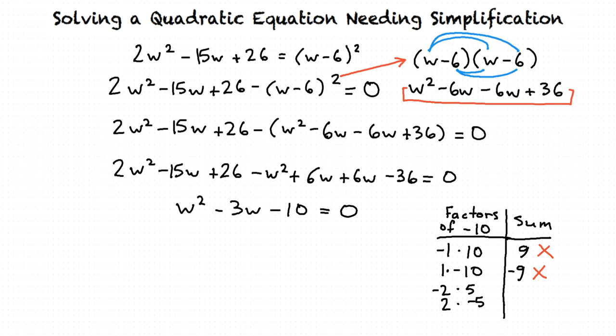The sum of negative 2 and 5 is 3, so that doesn't work. And the sum of 2 and negative 5 is negative 3. So it appears that 2 and negative 5 are the correct factors to choose.